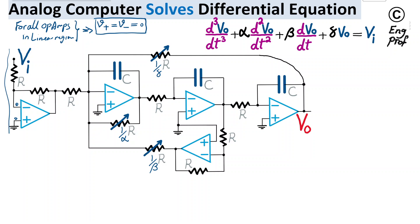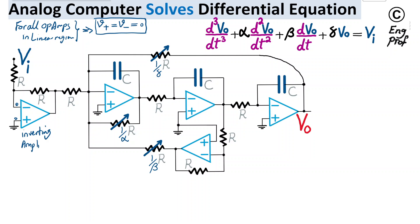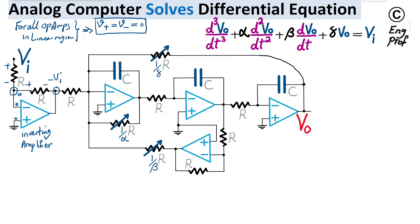The first op-amp on the left side of the circuit is simply an inverting amplifier. From Vi at the input, it generates negative Vi at its output, because the gain of an inverting amplifier is negative R over R, which equals -1. Using KCL, since this node is at virtual ground (0 V), the same voltage drop appears across both resistors, giving negative Vi at this node. So Vx equals negative R over R times Vi, therefore Vx equals minus Vi.